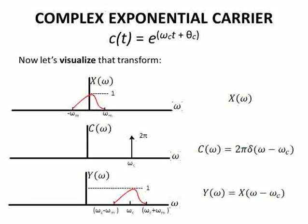Now let's visualize that transformation. At the top, we have X(ω), which is simply the Fourier transform of x(t).